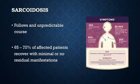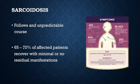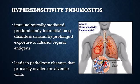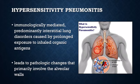Sarcoidosis follows an unpredictable course with noted periods of remission and relapse. The cause of death in patients suffering from this disease is due to progressive pulmonary fibrosis and cor pulmonale. Hypersensitivity pneumonitis describes a spectrum of immunologically mediated, predominantly interstitial lung disorders caused by intense, often prolonged exposure to inhaled organic antigens.